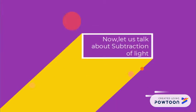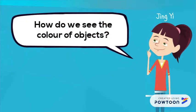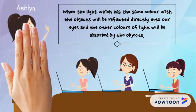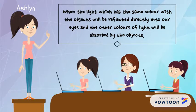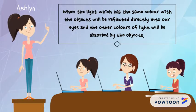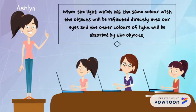Now, let us talk about subtraction of light. How do we see the color of objects? When the light which has the same color as the object is reflected directly into our eyes, and the other colors of light will be absorbed by the objects.